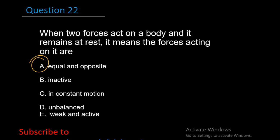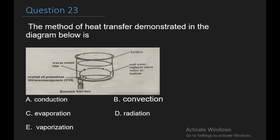Question 23: The method of heat transfer demonstrated in the diagram below. You can see the diagram. Is it conduction, convection, evaporation, radiation, or vaporization? So for this question, the right answer is B. This method is convection. Convection is simply a way in which heat travels and it occurs when heat is transferred by the movement of liquids or gases.